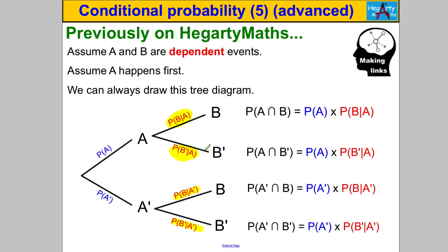We know we can multiply along the branches of the probability tree diagram. So the probability of A and B is P(A) multiplied by P(B|A). The probability of A and not B is P(A) multiplied by P(not B|A), and we multiply along similarly to get all of the outcomes.